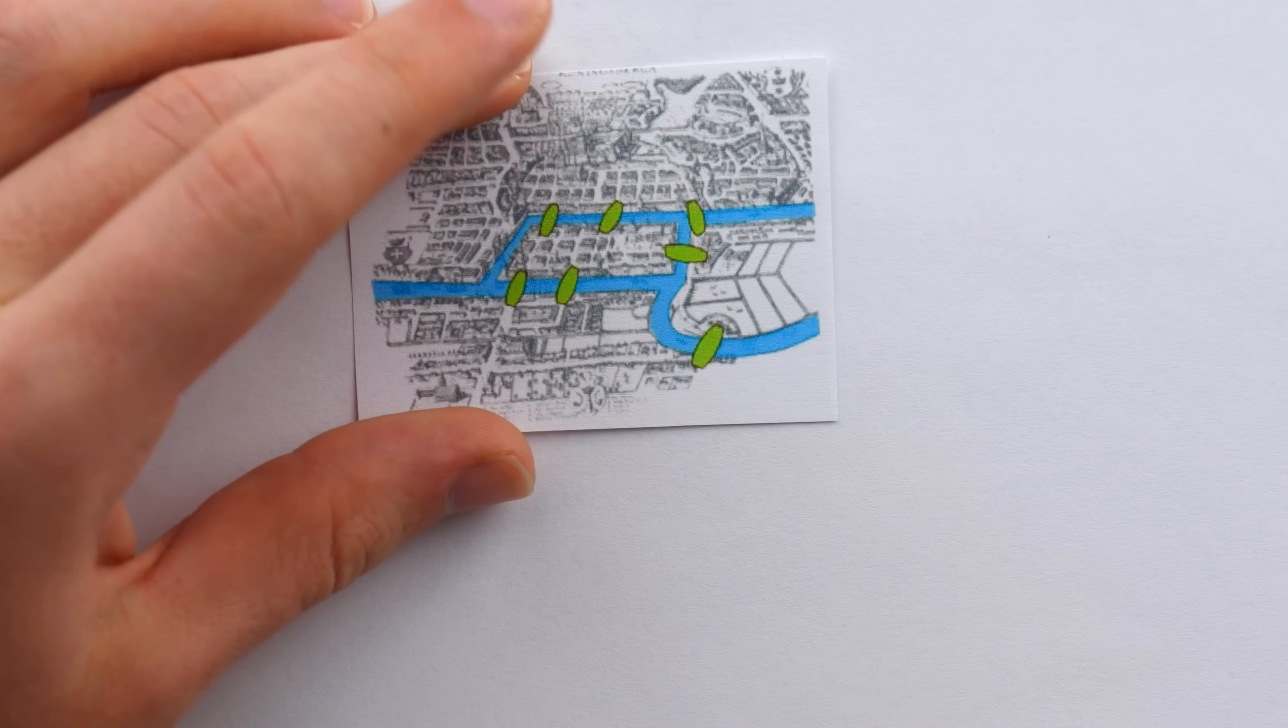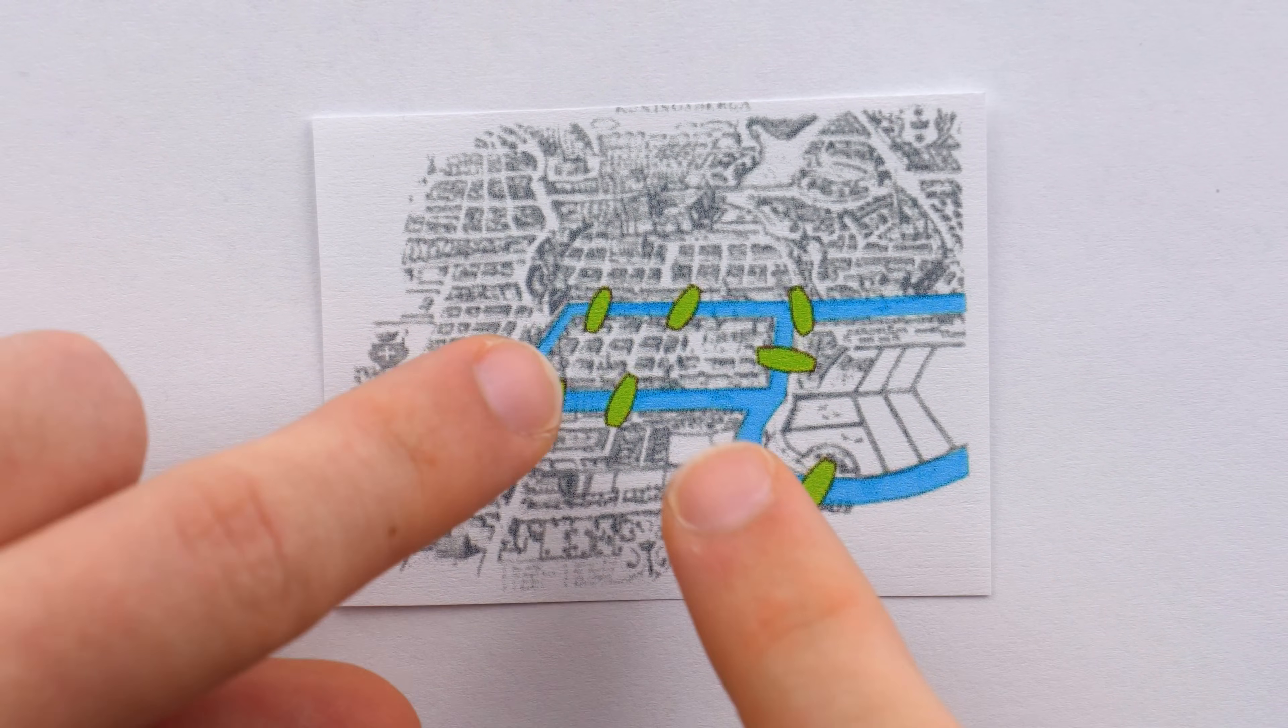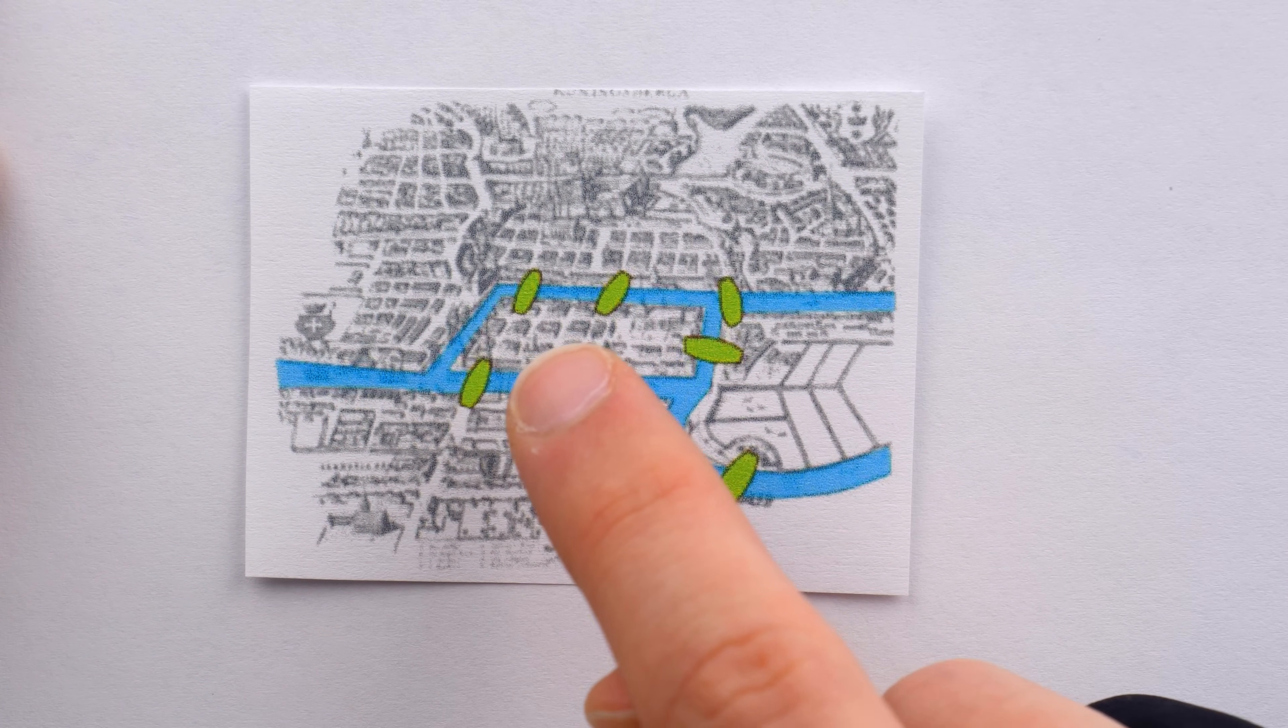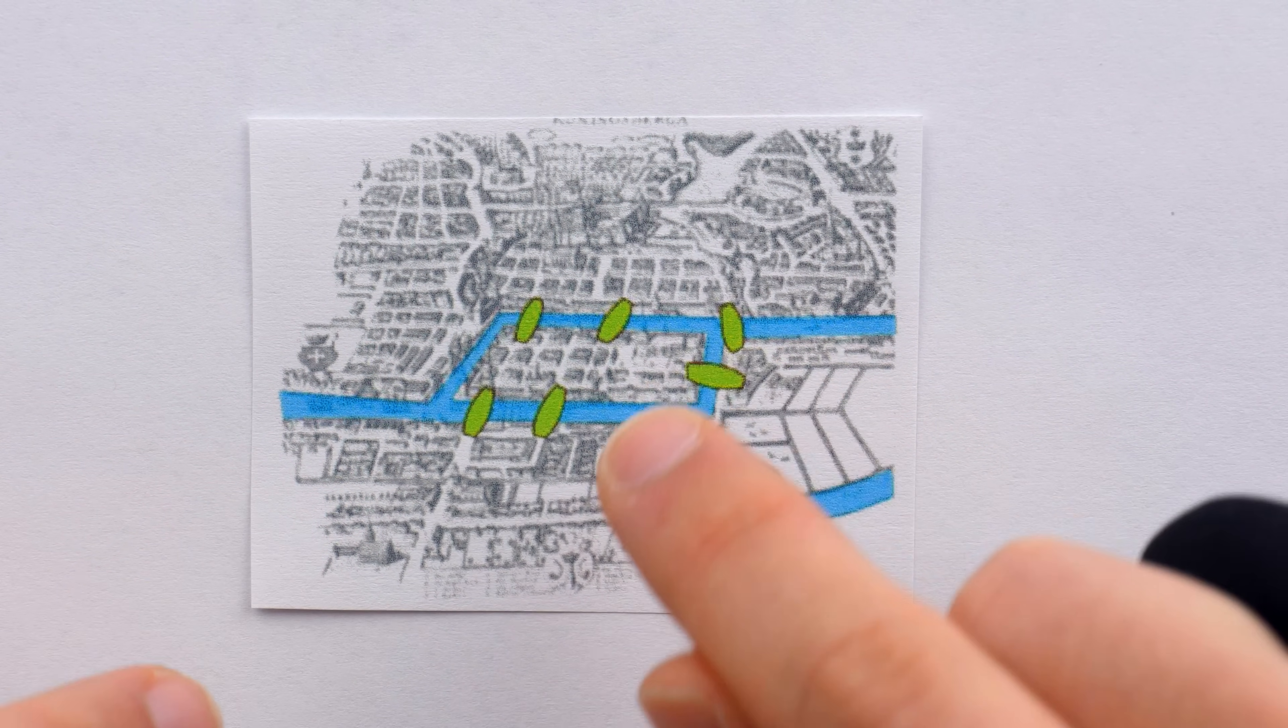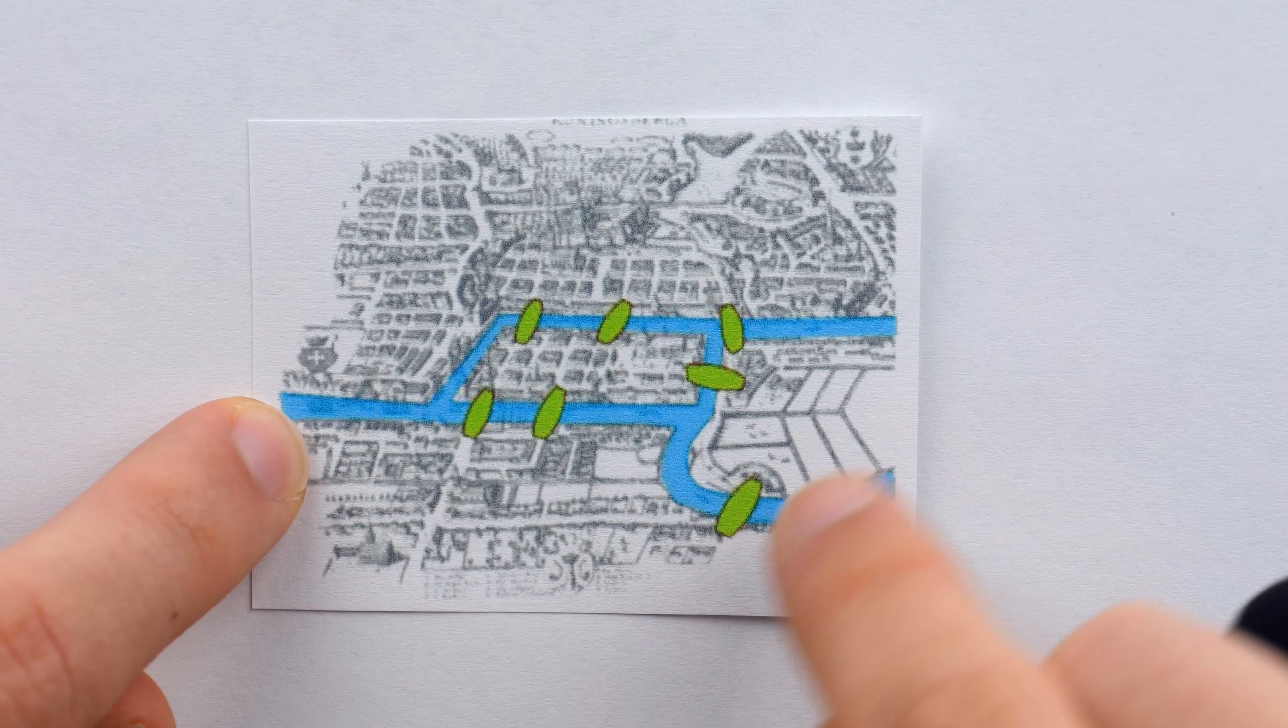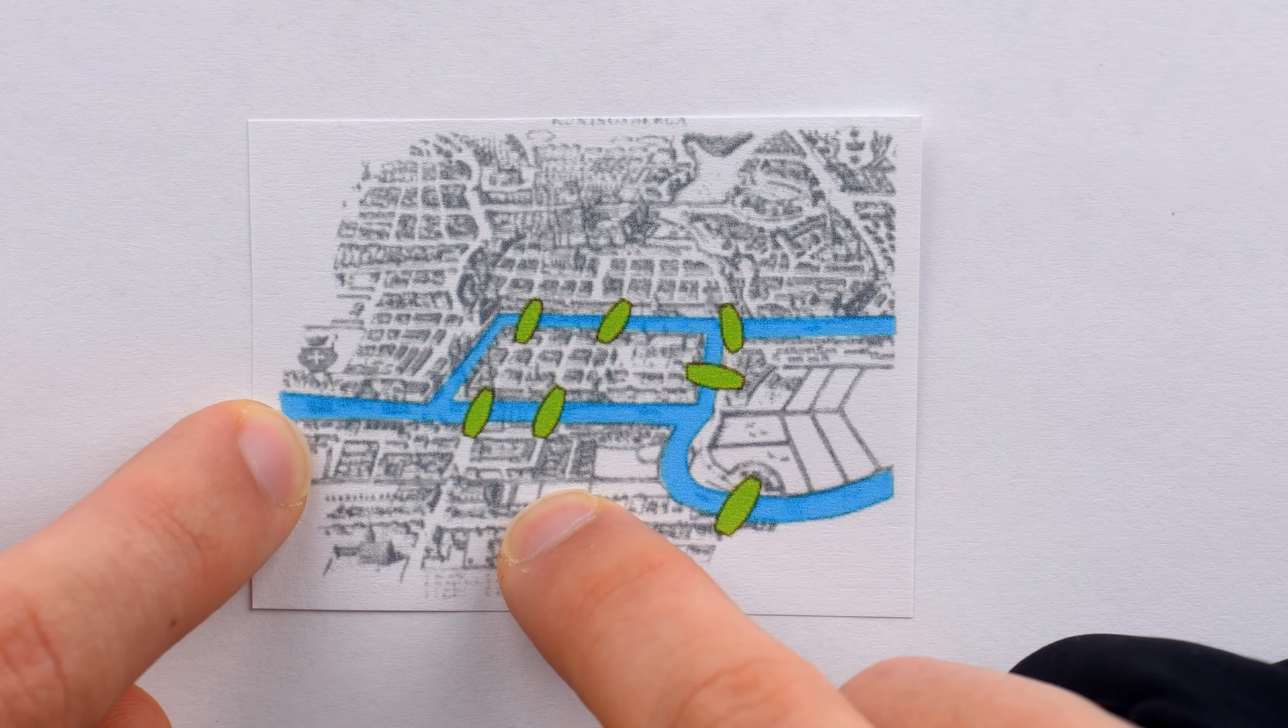This is an accurate layout of the medieval city of Königsberg, which had the Pregel River running through it, and it also featured a couple islands. Due to the awkward layout of this city, the seven bridges of Königsberg kept everything connected. Many people walked around the city and crossed these bridges.